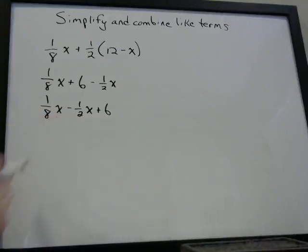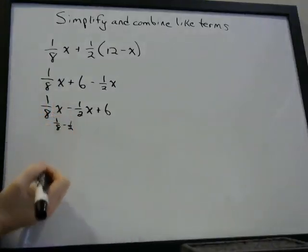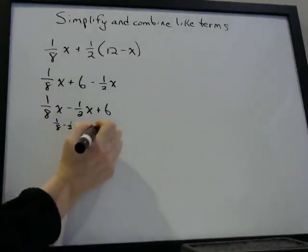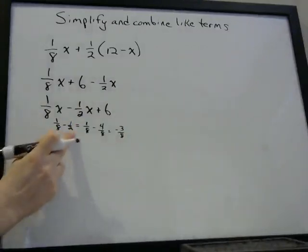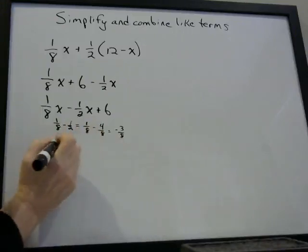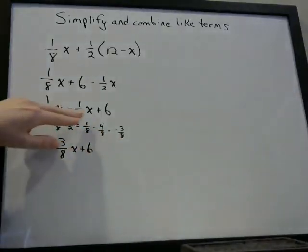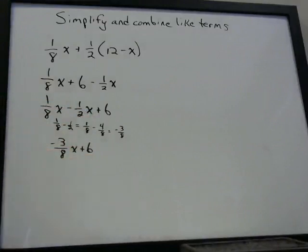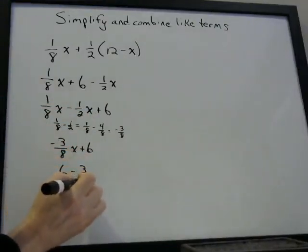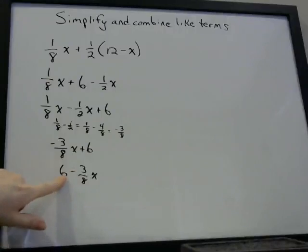Even though these are fractions, we're doing the same thing — we just look at the numerical part. So ⅛ minus ½: we convert to ⅛ minus 4/8, which equals minus 3/8. So even though these are fractions, it is the same thing. We're combining like terms only when they have X's beside each other. So the answer is negative 3/8X plus 6, or because of the commutative property, we can write it as 6 minus 3/8X.